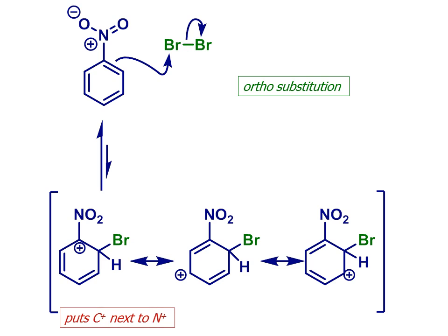Have a look at these different resonance possibilities for the bromination of nitrobenzene at an ortho position. Brominating at this position will force positive charge density onto the carbon immediately next door to the electron withdrawing group. This is not a desirable situation.